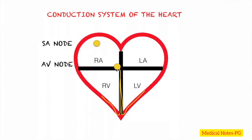The AV node gets to decide whether to let an impulse through. So if the SA node generates a weak impulse, or there is a block somewhere, the AV node will perceive that and decide not to let the impulse go through — instead, it will conduct its own impulse.